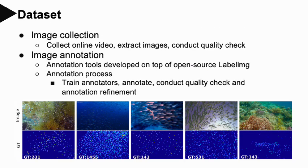Our images are all collected online. We collect online videos, extract images, and then conduct quality checks. For image annotation, our annotation tools are developed on top of open-source LabelImg. The annotation process includes the following steps: train annotators, annotate images, and then conduct quality check and refinement. For more details about this part, please refer to our paper.